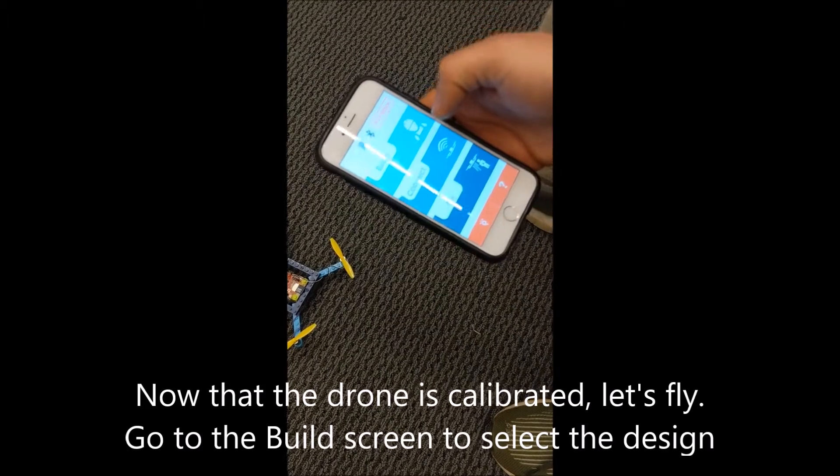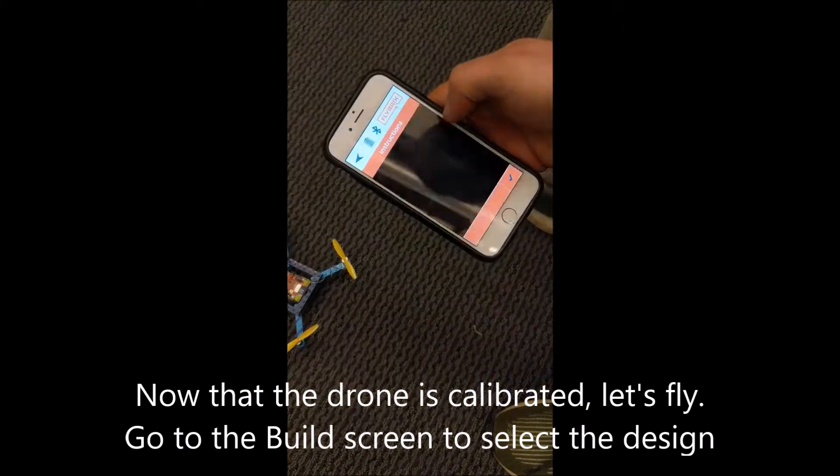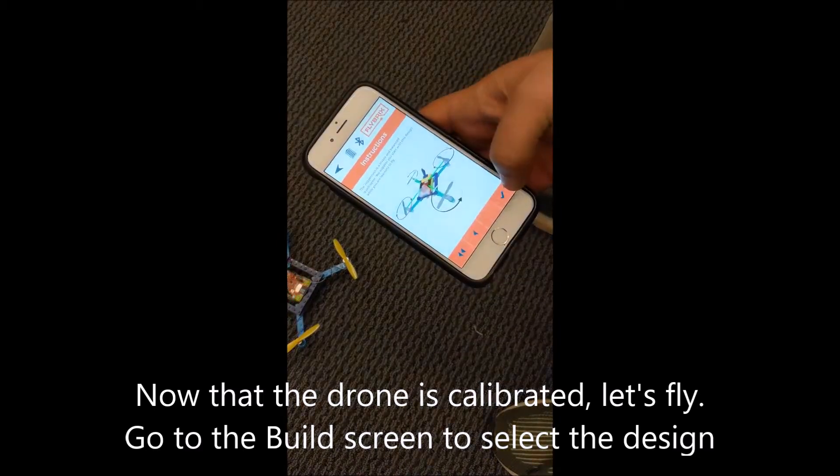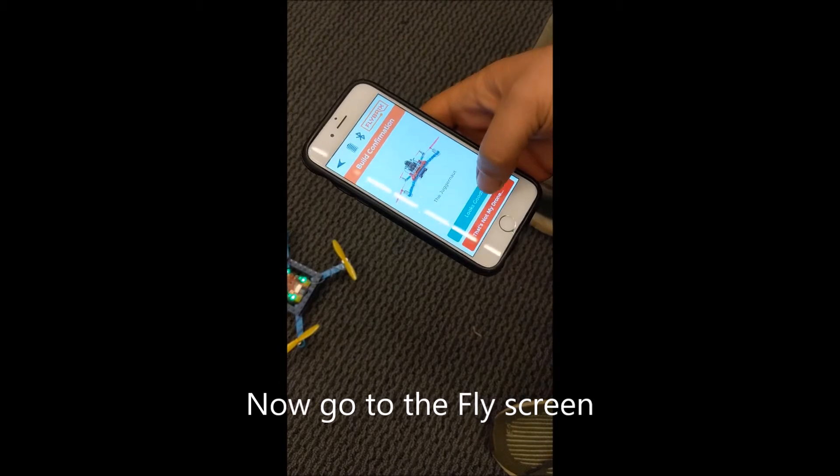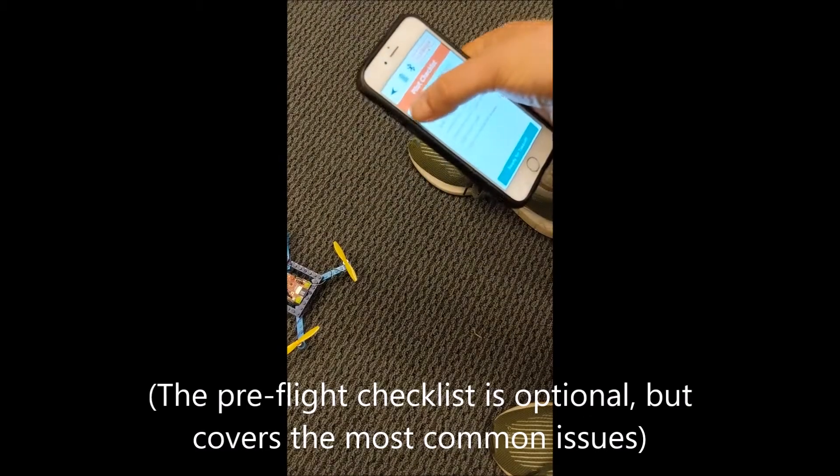Now that the drone is calibrated, we'll go to the build screen to select the design. Hit the checkbox and go to fly. You can check all the boxes.